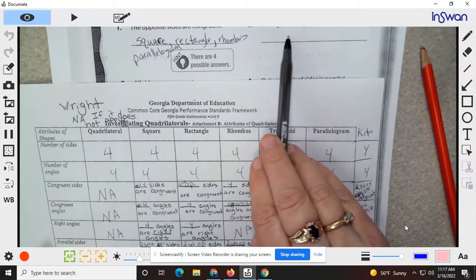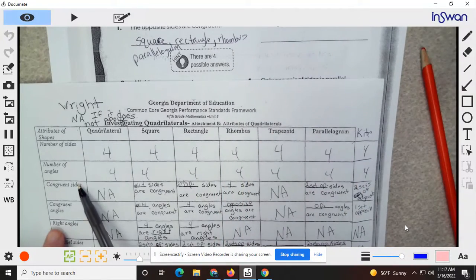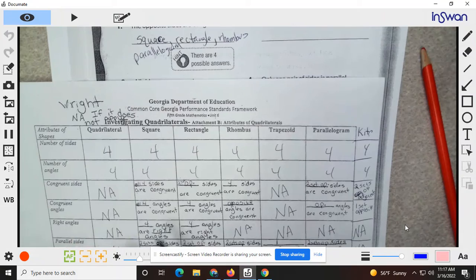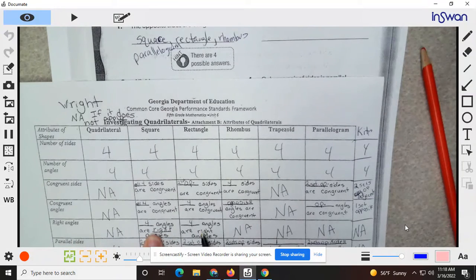All angles are right, so I can have two right angles. Square and rectangle.